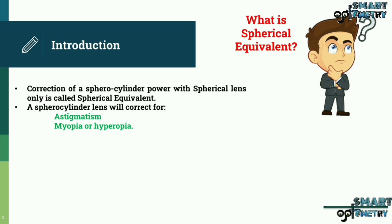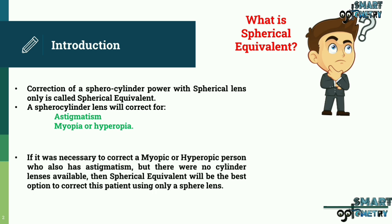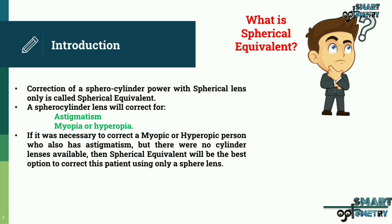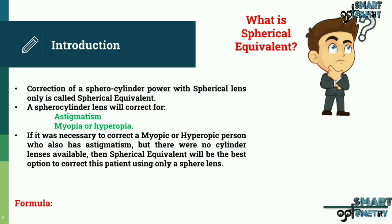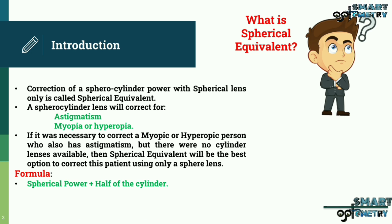If it was necessary to correct a myopic or hyperopic person who also has astigmatism, but there were no cylinder lens available, then spherical equivalent would be the best option to correct this patient using only a sphere lens. The formula to identify spherical equivalent is: spherical power plus half of cylinder power.